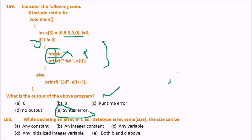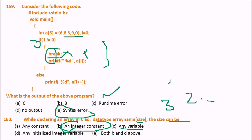When declaring an array in C as 'datatype arrayname[size]', what can the size be? The answer is any integer constant. A float constant like 32.12 is not valid, nor is any variable (float or otherwise). Any initialized integer variable is also not allowed — it must be an integer constant.